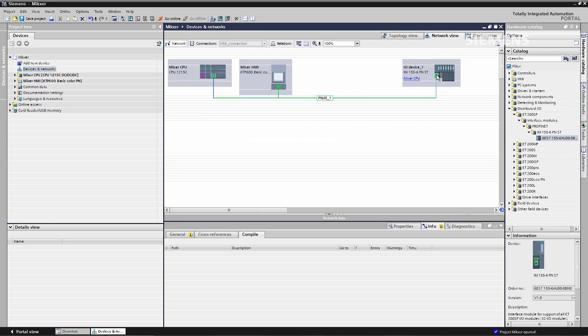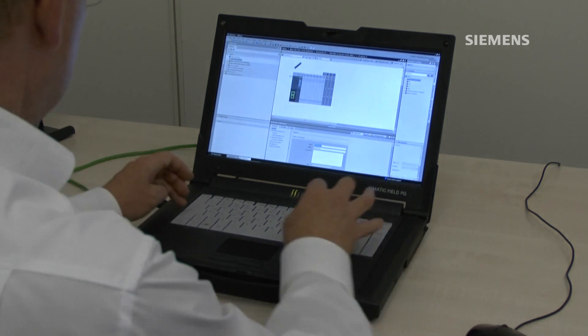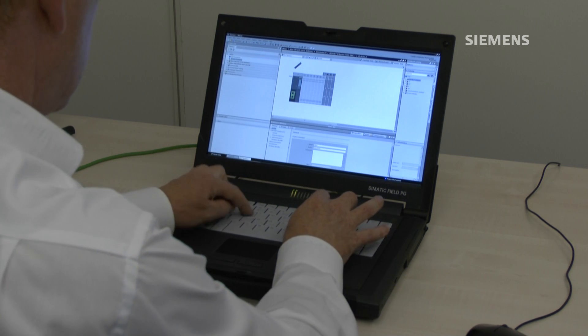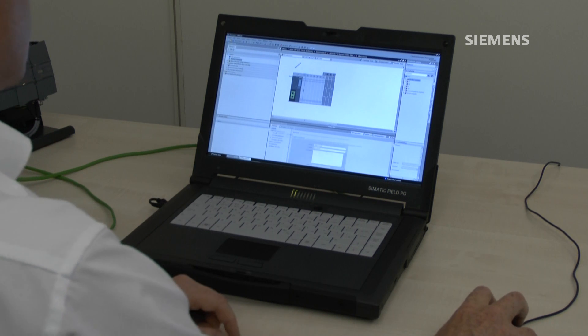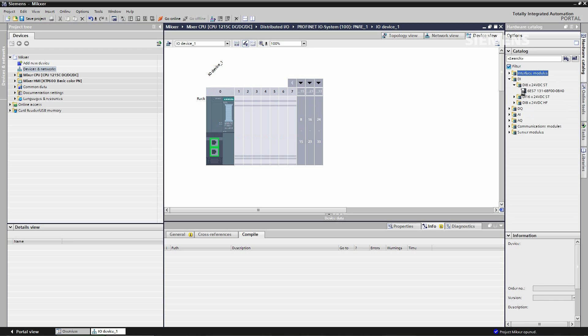I'm now going to give the ET200SP node a meaningful name, mixer remote, and I'm going to start to assign the IO modules. The first one is an 8 digital input module. So I double click and that's assigned into slot 1.